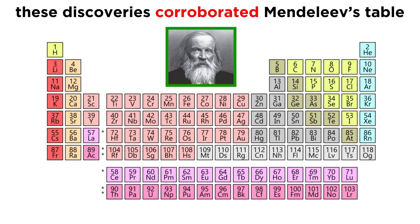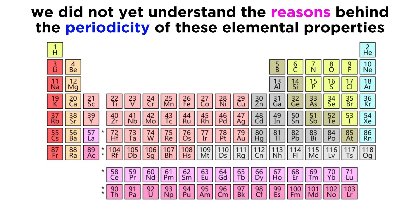Because elements were discovered and were found to have precisely the properties that Mendeleev predicted, this was strong evidence that his periodic table had a firm basis in the structure of these elements. It was still some time before we understood the reasons behind the periodicity of these properties, but this was a big step in our chemical understanding nonetheless.